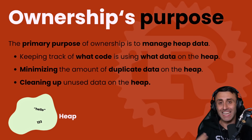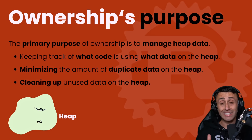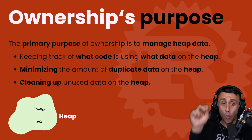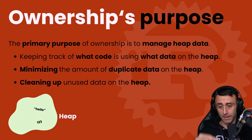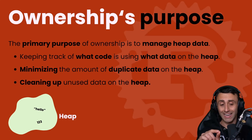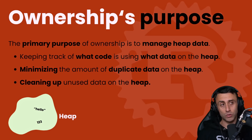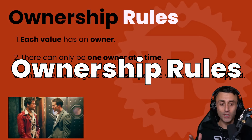The primary purpose of ownership is to manage heap data. It does three important things: first, it keeps track of what code is using what data on the heap; second, it minimizes the duplication of data on the heap — we'll see this with the move trait; and third, it cleans up unused data on the heap by calling something called the drop trait.